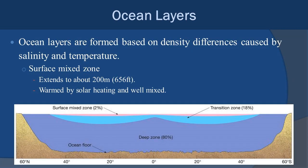The ocean as a whole is formed of a number of layers based on density differences. At the surface you have what we call the mixed zone, which extends to about 200 meters (around 656 feet). It's a zone warmed by solar heating with lots of wave action and surface currents — a lot of turbulence and mixing.